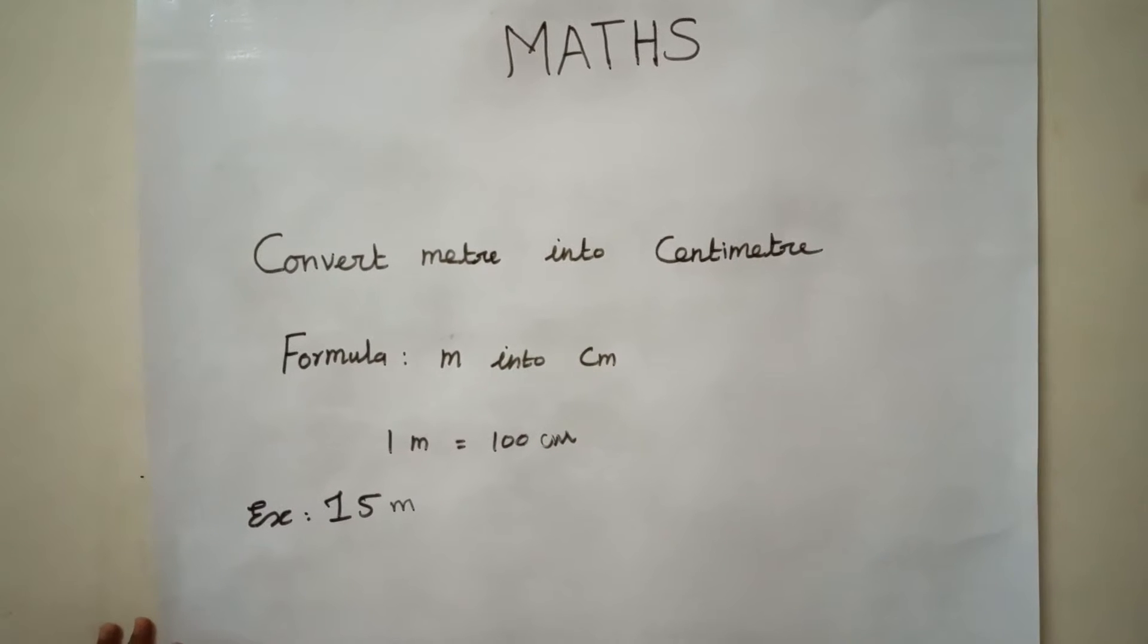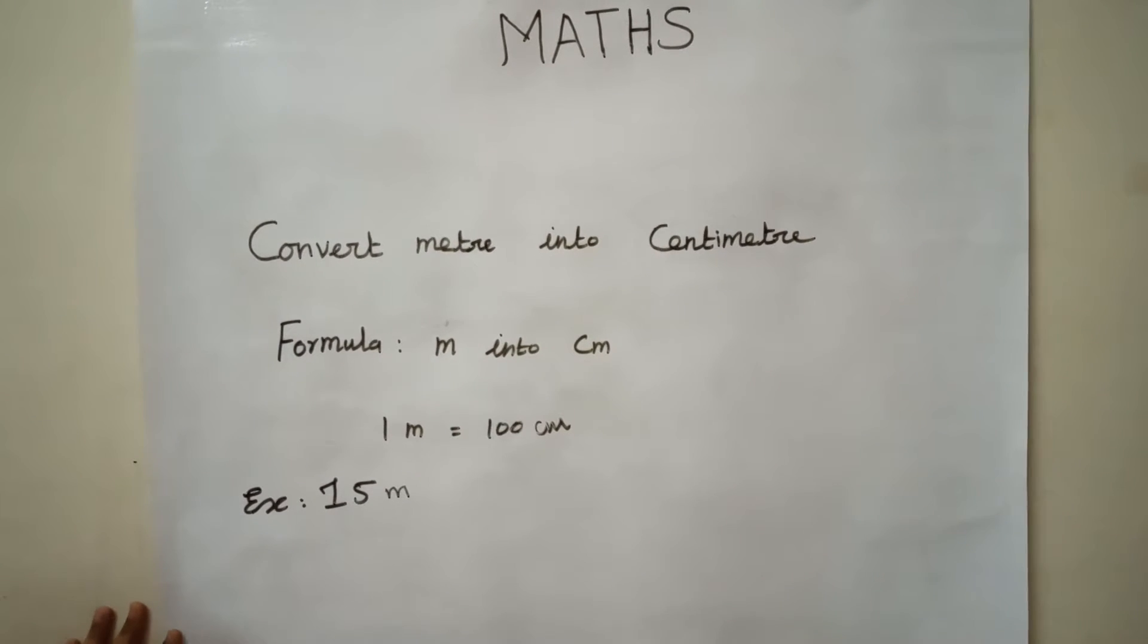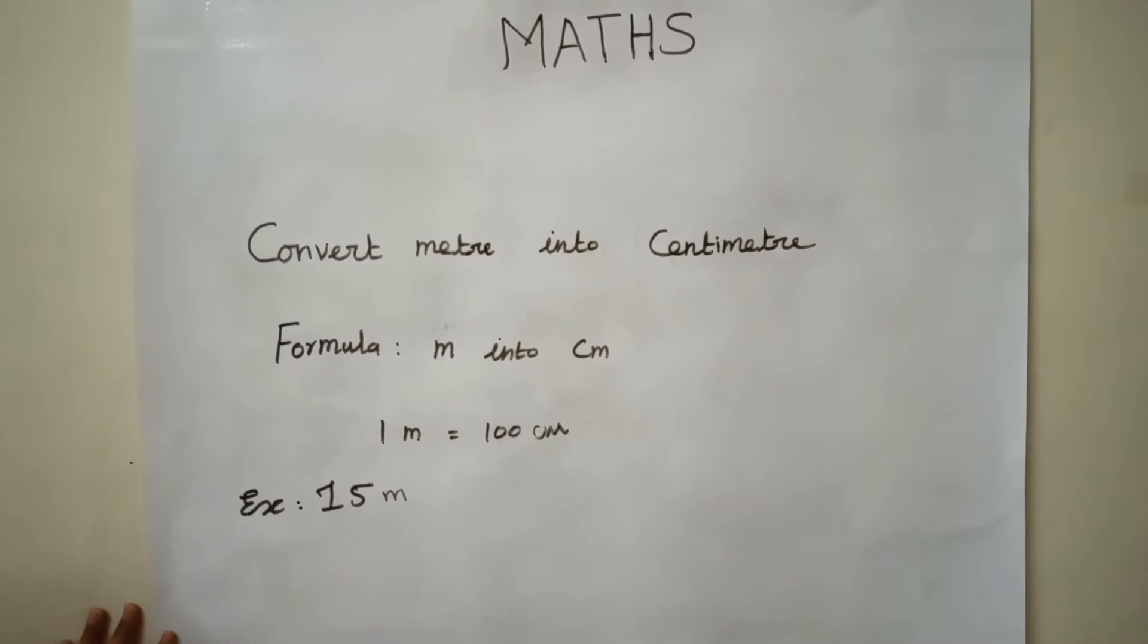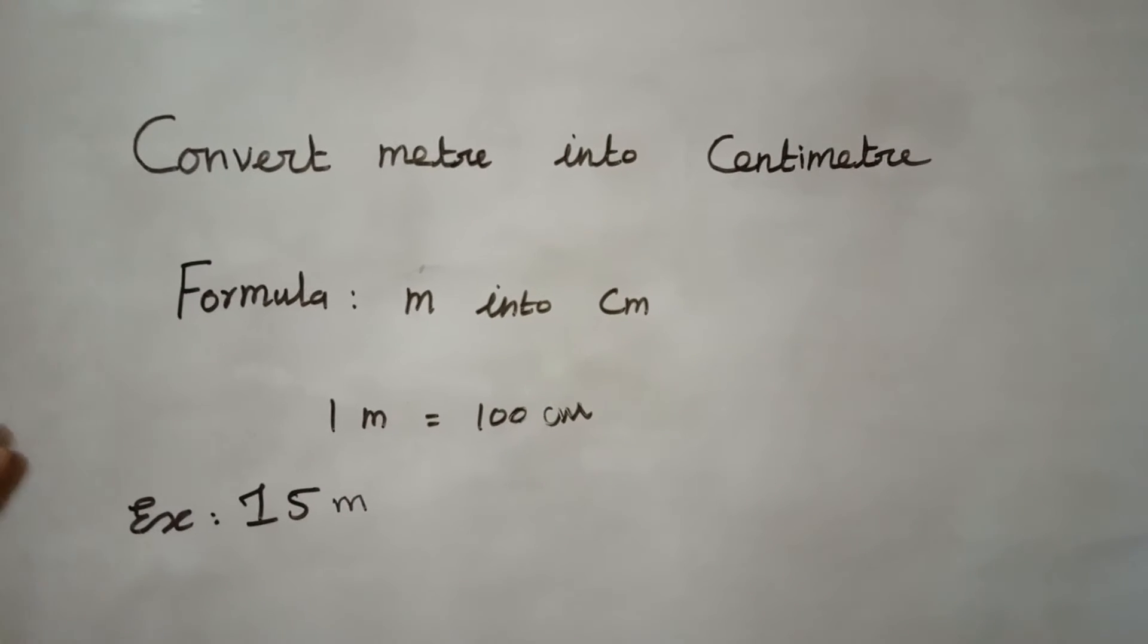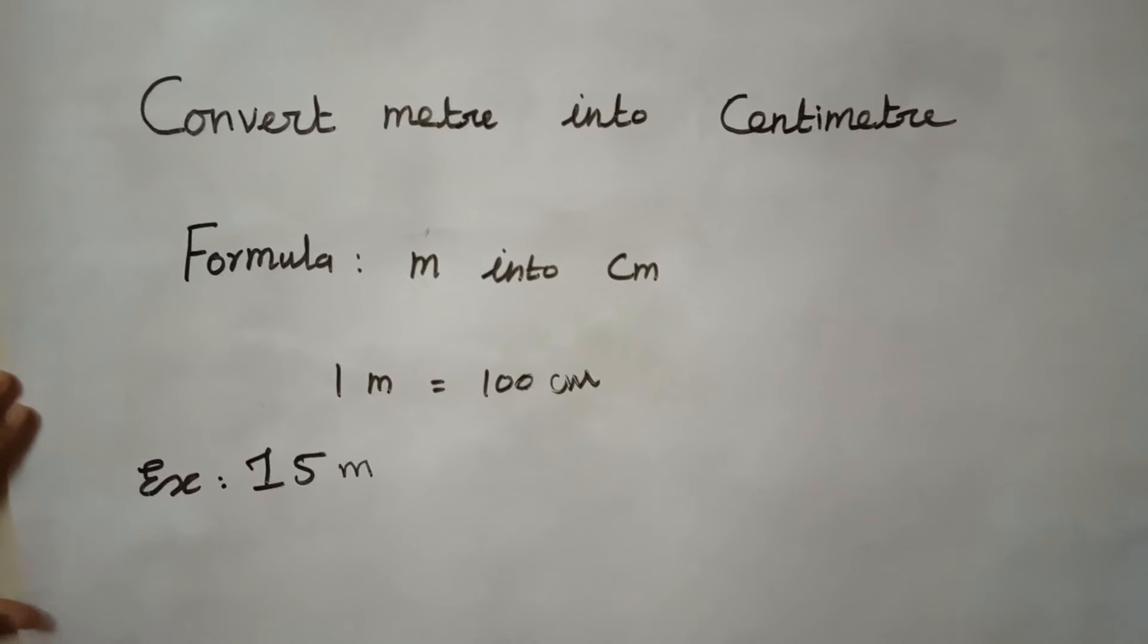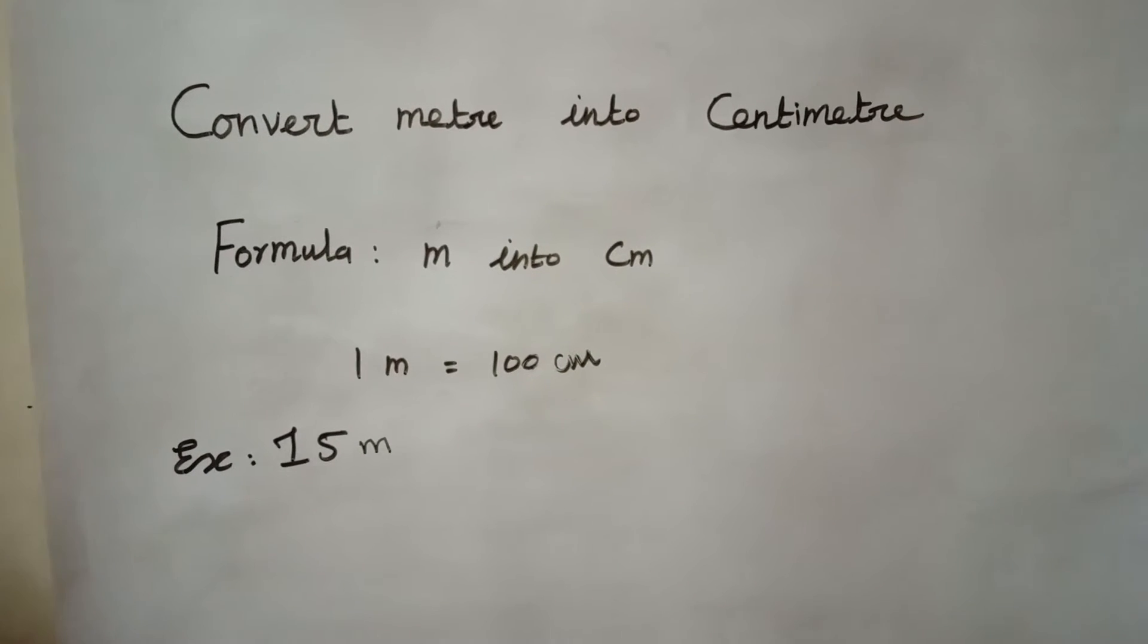Now we are going to see how to convert meters into centimeters. The formula of converting meters into centimeters is 1 meter is equal to 100 centimeters. Now we are going to see an example: 50 meters. It is very easy to convert.